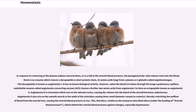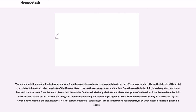Angiotensin I has no known biological activity. However, when the blood circulates through the lungs, the pulmonary capillary endothelial enzyme called angiotensin-converting enzyme (ACE) cleaves off a further two amino acids from angiotensin I to form an octapeptide known as angiotensin II. Angiotensin II is a hormone which acts on the adrenal cortex, causing the release into the blood of the steroid hormone aldosterone. Angiotensin II also acts on the smooth muscle in the walls of the arterioles, causing these small diameter vessels to constrict, thereby restricting the outflow of blood from the arterial tree, causing the arterial blood pressure to rise. This therefore reinforces the measures described under the heading of arterial blood pressure, which defend the arterial blood pressure against changes, especially hypotension.